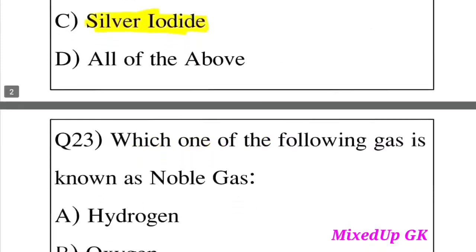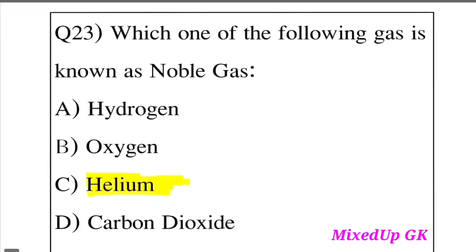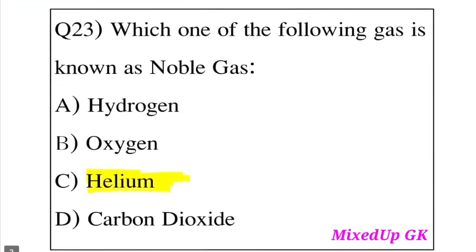Question 23: Which one of the following gases is known as a noble gas? Option A: Hydrogen. Option B: Oxygen. Option C: Helium. Option D: Carbon dioxide. The answer is Option C, Helium. Helium is a noble gas. Noble gases include helium, neon, argon, and krypton.